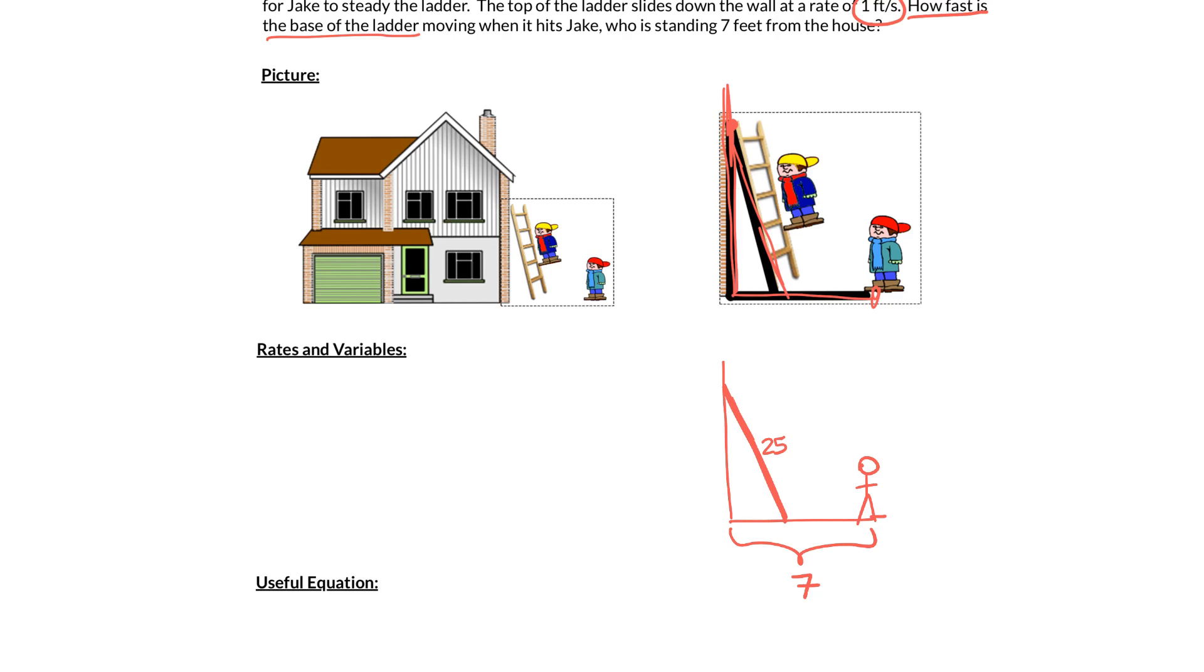So one thing that we might end up being interested in is this distance here from the top of the ladder to the ground. And the reason we're going to be interested in that is because we're interested in this rate of how fast the ladder is falling. And whenever we want to measure a rate, we need to measure a rate as a rate of change of something specific, and if that is a rate of change of distance, then it needs to be from something moving to something still.